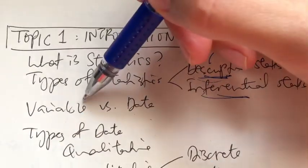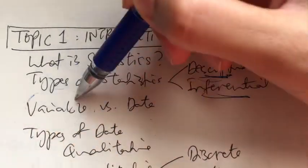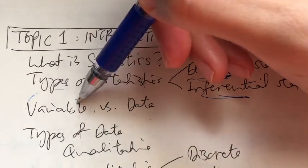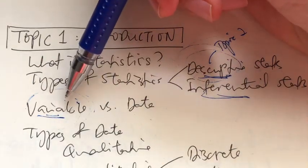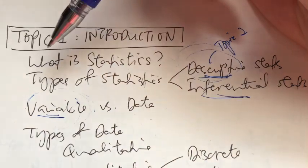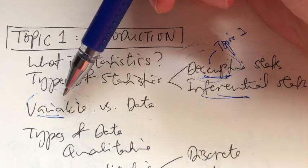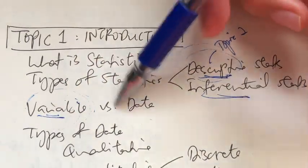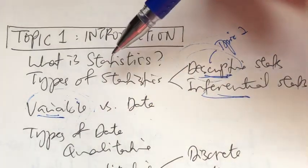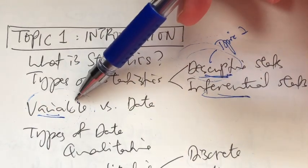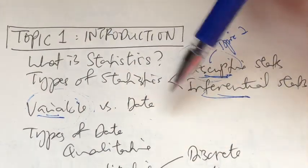We also learned about variables and data. There's a slight difference between the two. A variable is basically a characteristic that we are interested in for a particular study — the root word is 'vary,' meaning the values are not fixed, always changing. If asked to define a variable, you cannot give a number; it has to be a statement. Whereas data is basically the facts and figures we collect that reflects a particular variable — for instance, if I'm interested in the variable 'height,' I collect all the heights of students.